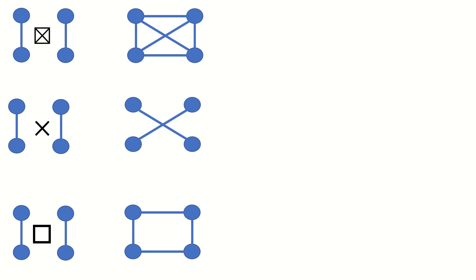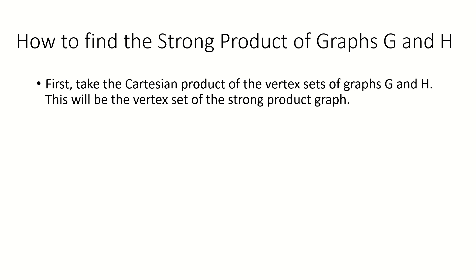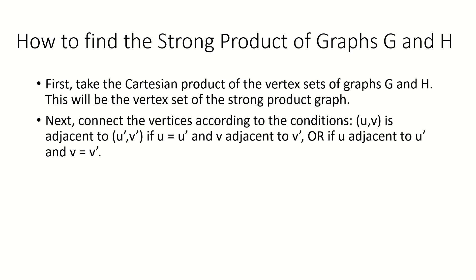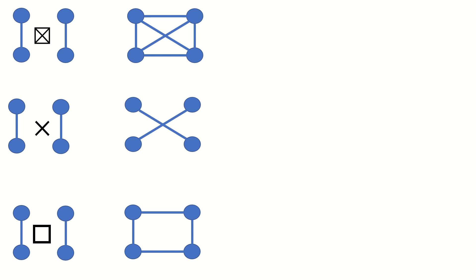Here's a summary of strong products. To find the strong product of two graphs G and H, find the vertex set using the Cartesian product of the vertex sets of its factor graphs G and H. Then connect the vertices as if you were taking a Cartesian product of those graphs, and then, keeping those connections in place, connect vertices as if you were taking a tensor product. Every adjacency in the Cartesian product and every adjacency in the tensor product is also in the strong product, and the vertex set is defined as the Cartesian product of the vertex sets of its factor graphs.